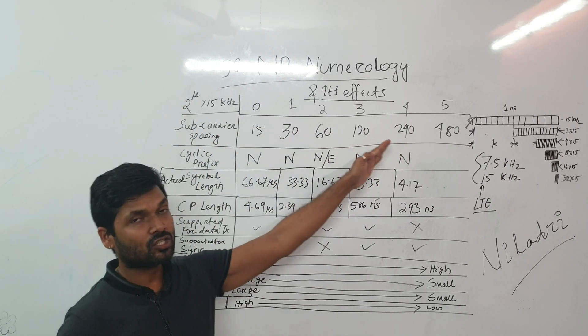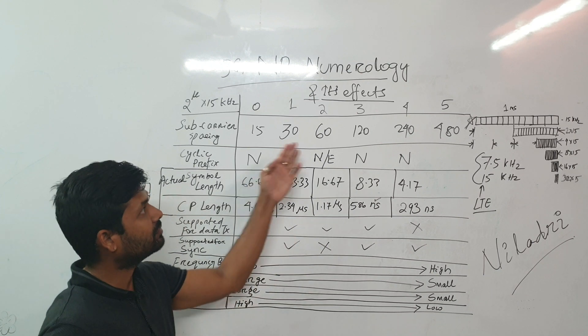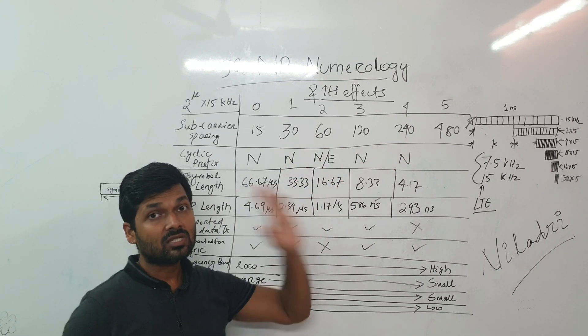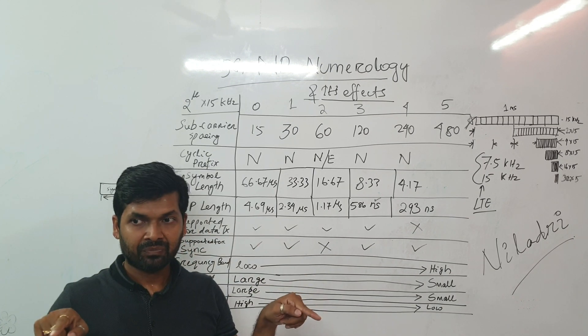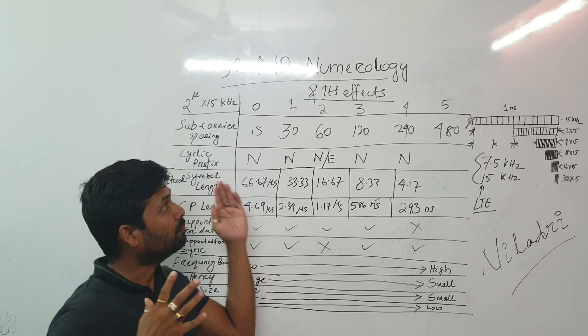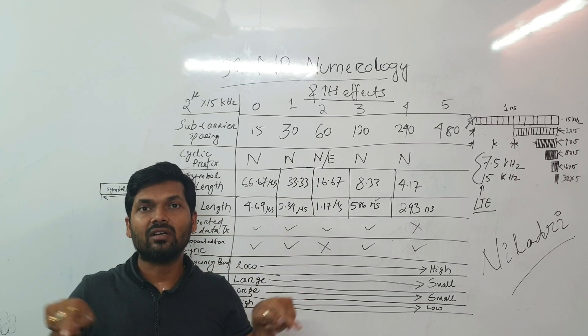So these are the different subcarrier spacing used in NR. So we have 5 to 6 types of subcarriers which is used. That is why we are able to serve multiple subcarriers in one radio frame.